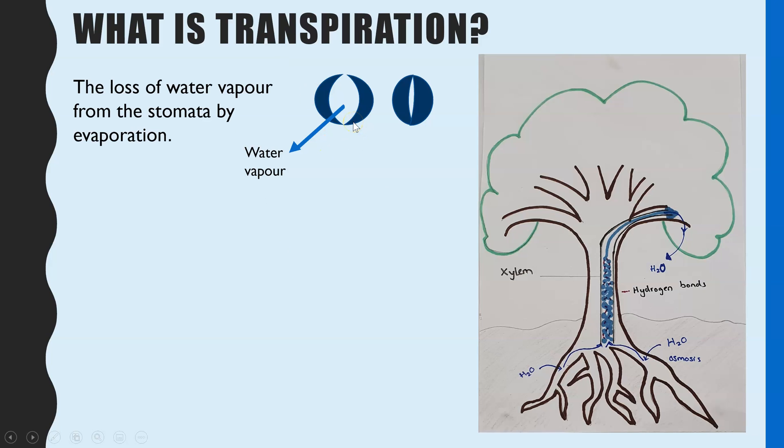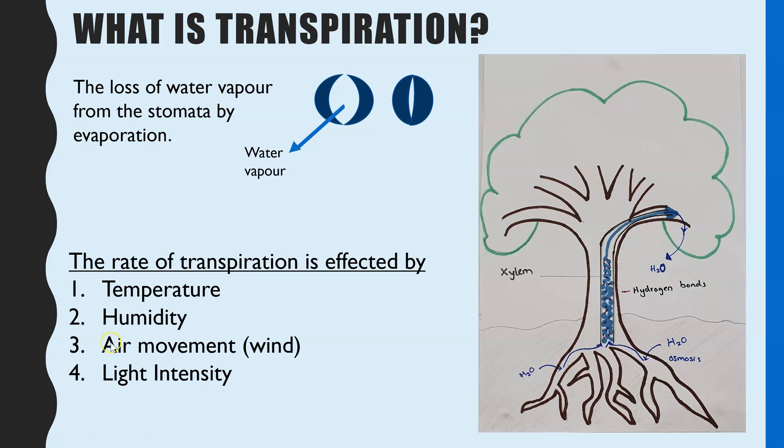Transpiration is when water vapor is evaporating out of open stomata, which are mainly found on the leaves. We can see here that when that water vapor does evaporate out of the leaves, it will then draw up this continuous water column through the xylem of the plant. You get this continuous flow of water from the soil where it's absorbed by osmosis, then up the xylem and out by transpiration. There are four key factors which affect the rate of transpiration: temperature, humidity, air movement or wind, and light intensity.